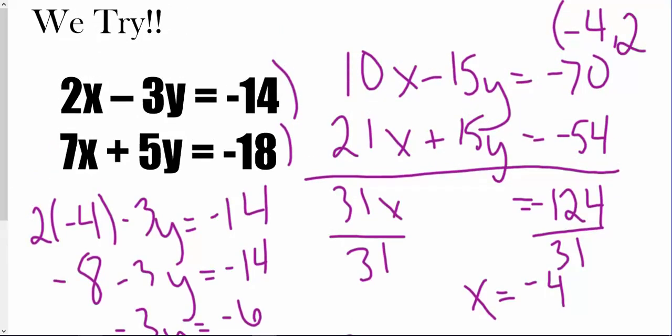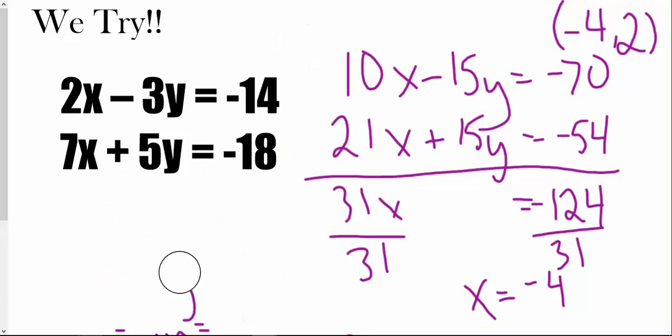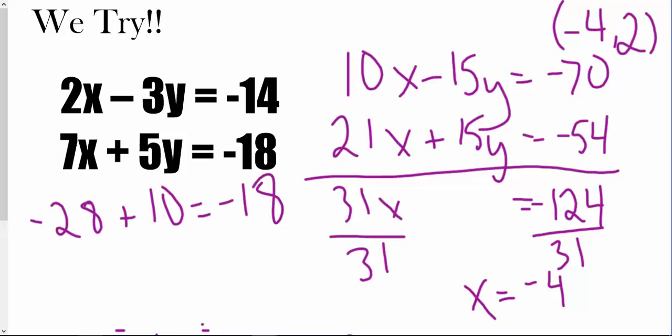So I have the point negative 4 comma 2. Checking with the bottom equation gives negative 28 plus 10, which equals negative 18 — so we're good. Our solution, our intersection point, is negative 4 comma 2. Note that we can still get infinite or no solutions with elimination — you'd get 0 equals 0 for infinitely many solutions, or 0 equals some other number for no solution.